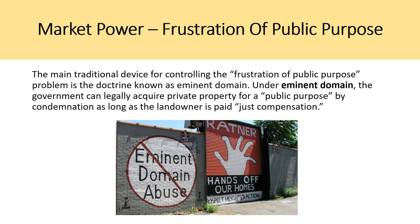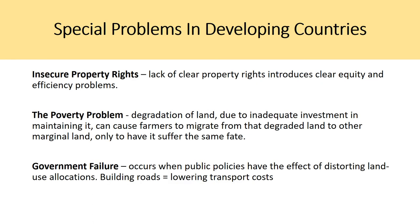The main traditional device for controlling the frustration of public purpose problem is a doctrine known as eminent domain. Under eminent domain, the government can legally acquire private property for a public purpose by condemnation, as long as the owner is paid just compensation. The government will get someone to value your property and then force you off it — this creates a lot of controversy for those who hold out.